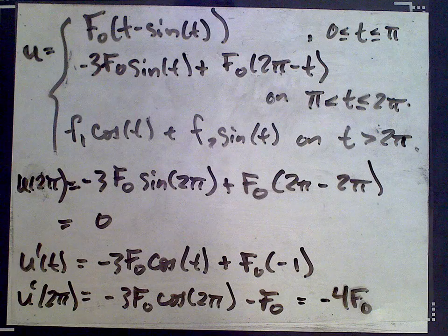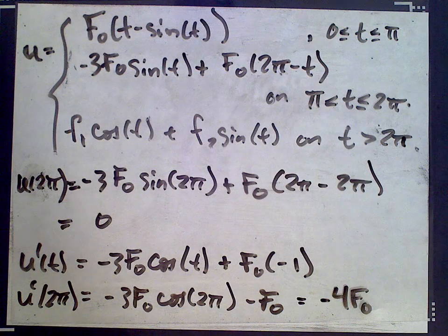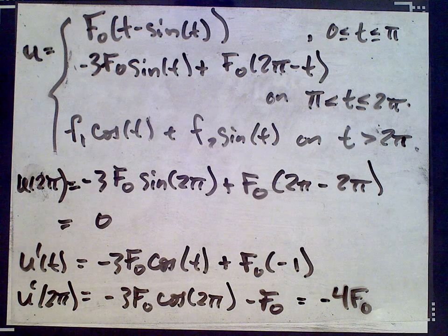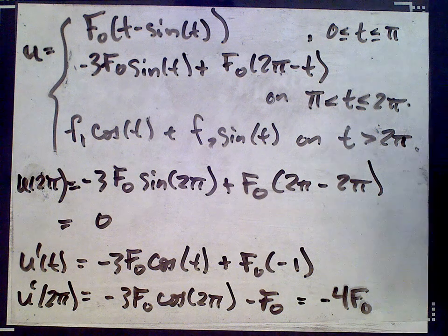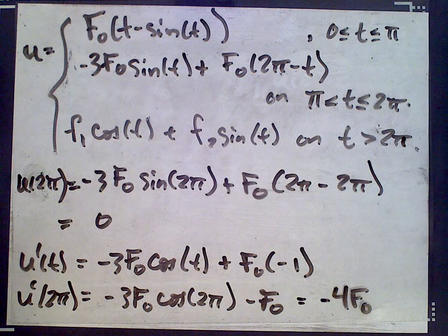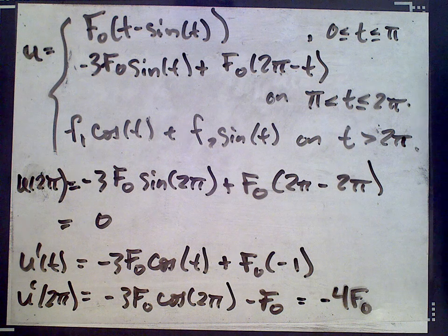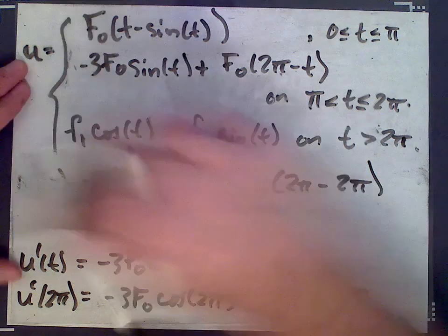Okay, so let's again solve for our constants. So u of 2π is 0, u prime of 2π is negative 4 f0.